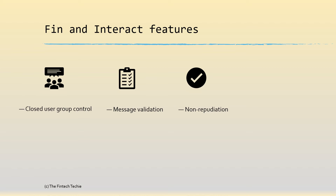A third very important feature is non-repudiation. What it means is that in case of a dispute between two institutions, Swift is able to confirm that a message exchange did or did not take place as claimed. And of course, the most important one is SwiftNet PKI security, which takes care of authentication, encryption, and integrity control. Swift provides its own public and private key infrastructure for encryption.